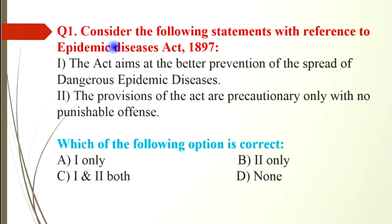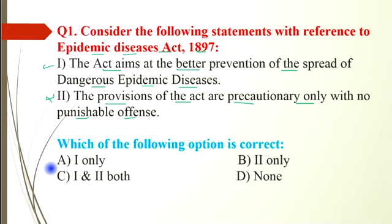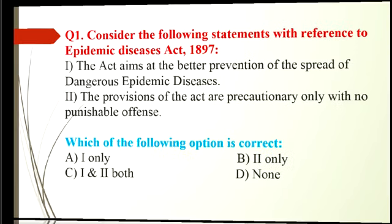Question number 1 is with reference to the Epidemic Diseases Act 1897. Statement 1: the Act aims at better prevention of the spread of dangerous epidemic diseases. Statement 2: the provisions of the Act are precautionary only with no punishable offense. Statement 1 is correct and statement 2 is incorrect. So the answer is option A, statement 1 only.